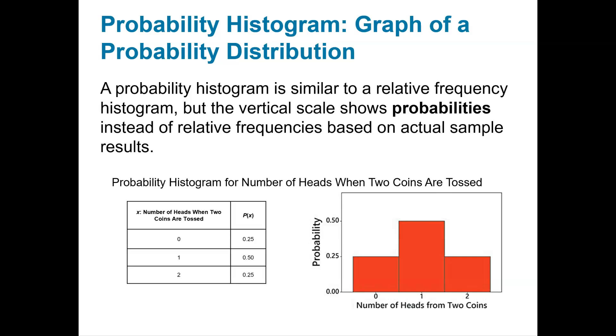We can take a probability distribution, from example one, and turn it into a probability histogram. We take the random variables x and place those on our x-axis, or the horizontal axis. The probabilities themselves go on our vertical axis, and then we can graph accordingly.